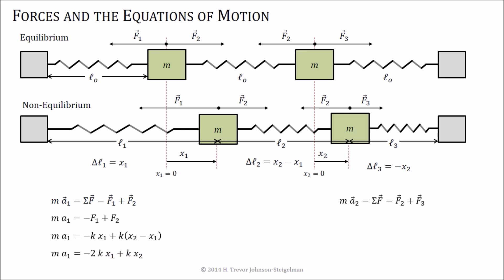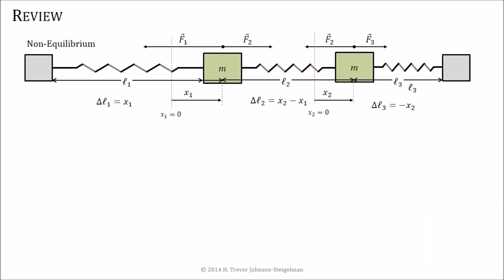I can go through the exact same process on the other mass. I won't bore you with the details on this one, other than to show you that ma2 is equal to negative 2kx2 plus kx1. Okay, so these two equations look very similar, except the x1 and x2 are switched in each of the two equations. I just wanted to go through the setup of this.